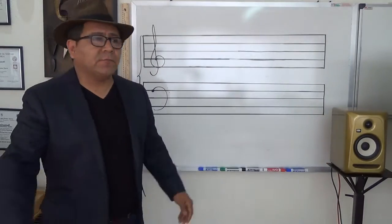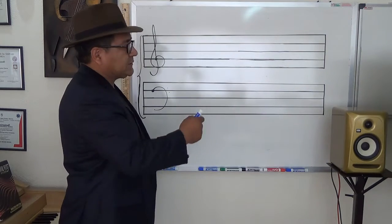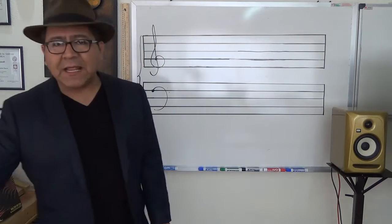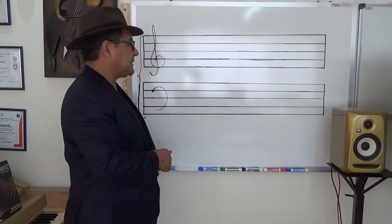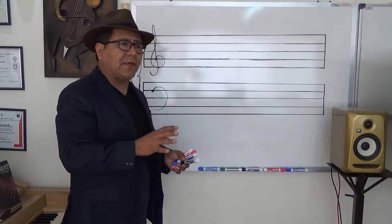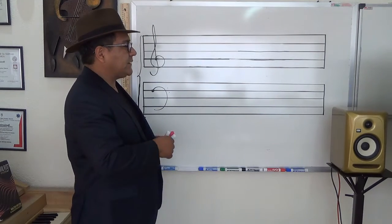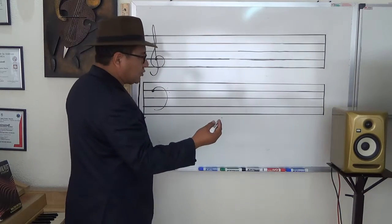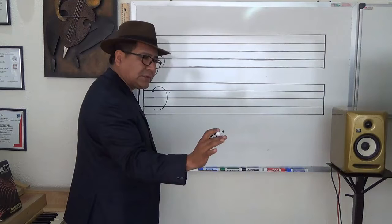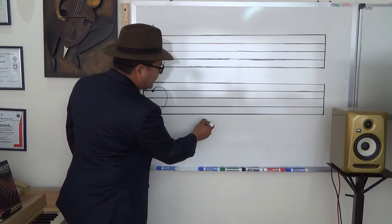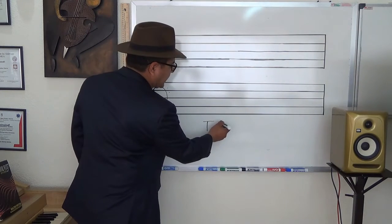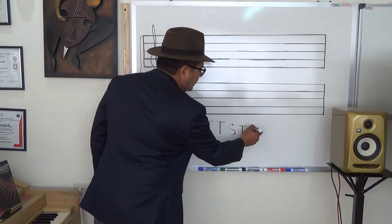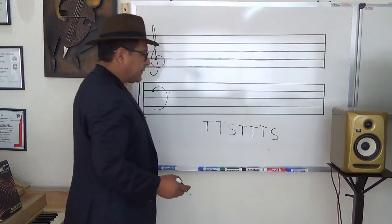What I'm going to do at the whiteboard is show you the formula used for the major scale — in this case, the diatonic scale in major mode, which is formed by two tetrachords joined by semitones. The scale uses a formula that starting from any note is: tone, tone, semitone, tone, tone, tone, semitone.